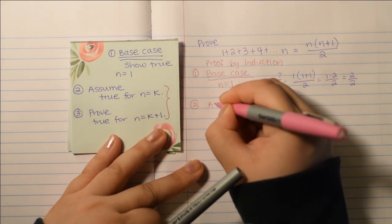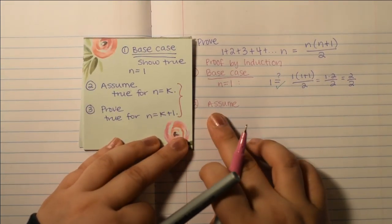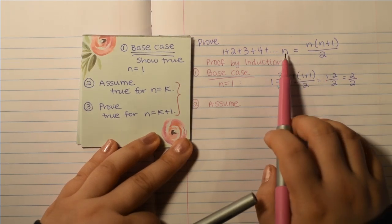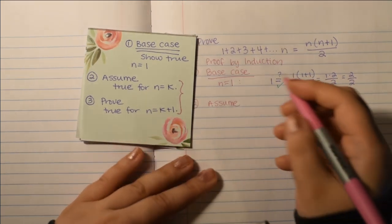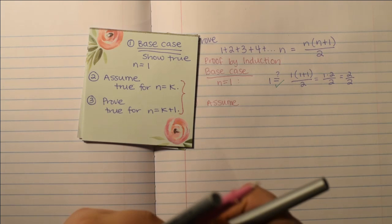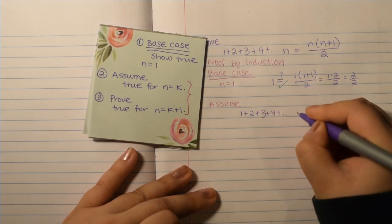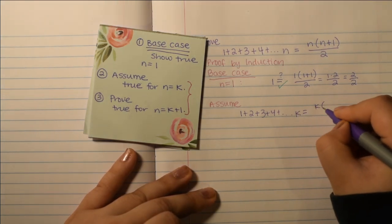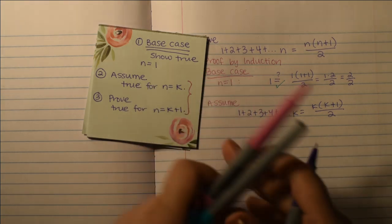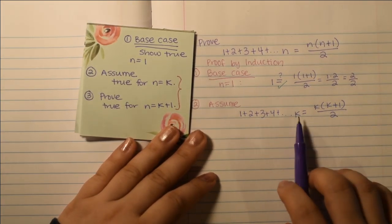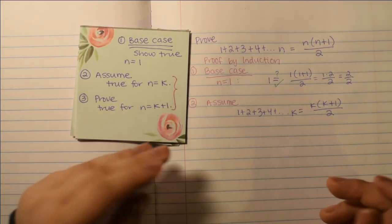Step 2, we assume true. So, assume that it's true for n equals k. So, assume that if n equals k, assume that 1 plus 2 plus 3 plus 4 plus dot dot dot k equals k times k plus 1 over 2. So, that's just plugging in n equals k and just assuming. So, that's it. Just write, for step 2, just write your assumption.